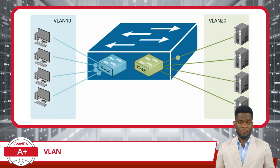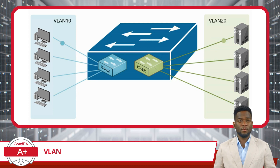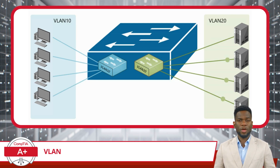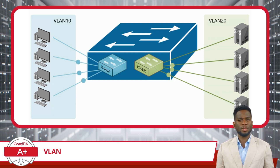Essentially, VLANs provide a way to segment network traffic, ensuring that devices within the same VLAN can communicate with each other, but not with devices in different VLANs, unless specifically configured to do so.